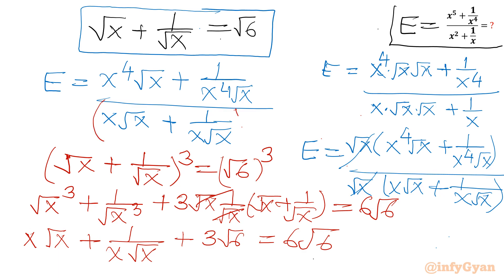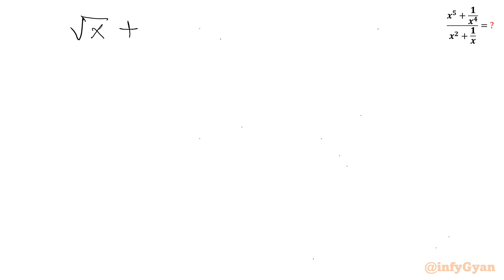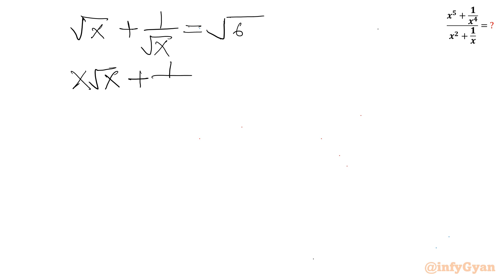The denominator is now ready. From 6 root 6 minus 3 root 6, the denominator x root x plus 1 over x root x equals 3 root 6. This is our denominator. Also, from the cube expansion, we can confirm that root x plus 1 over root x equals root 6, which we already knew.